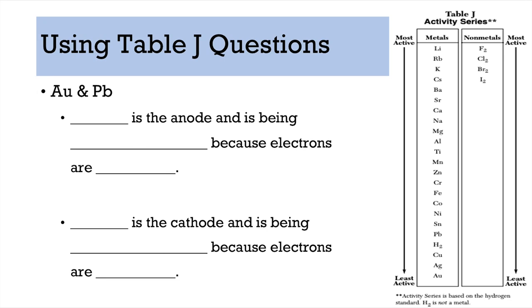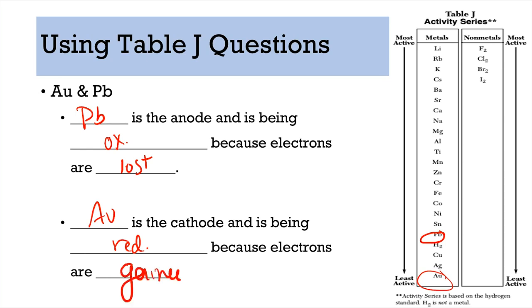Next pair: lead (Pb) and gold (Au). Gold is the least active, at the very bottom. Because lead is higher up, it will be oxidized and electrons are lost — lead is the anode. Gold is lower, making it the cathode — it is being reduced and electrons are gained.